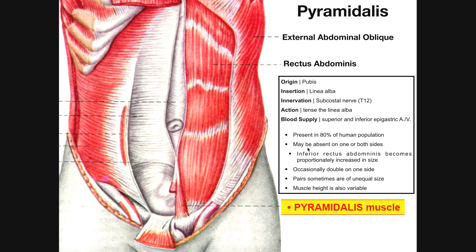It gets even more complicated than that — it may be absent on one side. Some people may only have a left pyramidalis and lack the right, or vice versa. In cases where the pyramidalis is absent, the region of the rectus abdominis in that area is actually going to be a little bit larger to compensate. So if you're lacking this muscle, you don't lose strength, because the rectus abdominis enlarges to compensate for its absence. Sometimes the pyramidalis can even be doubled on one side — so you could have none on the right and two on the left. Sometimes pairs can be unequal in size.